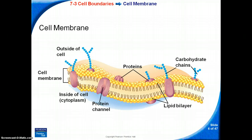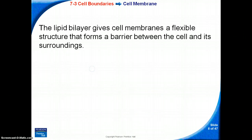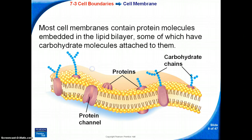Here you will see an example of the cell membrane. In this diagram, notice all the various portions that make up the membrane. The composition of nearly all cell membranes is a double-layered sheet called a lipid bilayer. The lipid bilayer gives cell membranes a flexible structure that forms a barrier between the cell and its surroundings. Most cell membranes contain protein molecules embedded in the lipid bilayer, some of which have carbohydrate molecules attached to them.